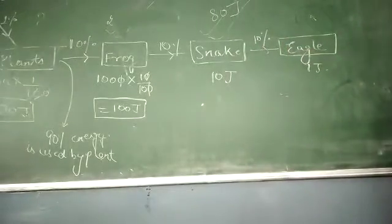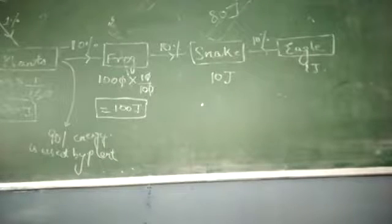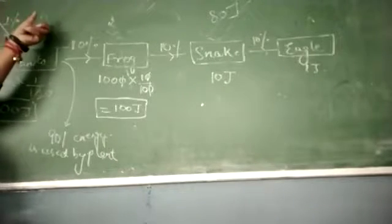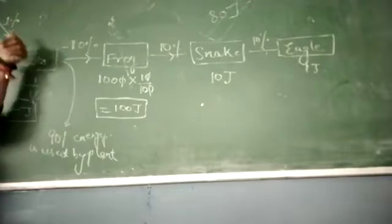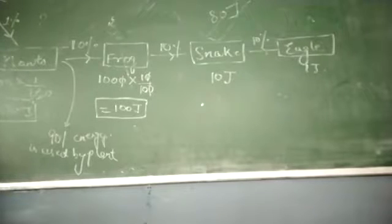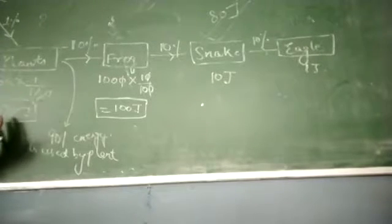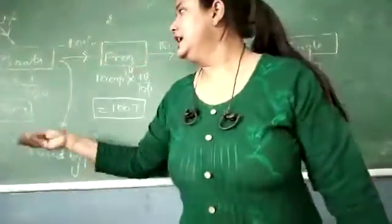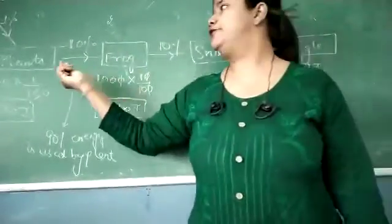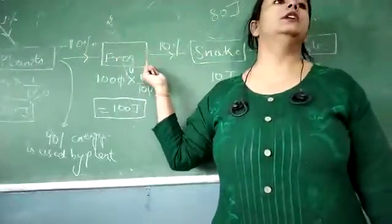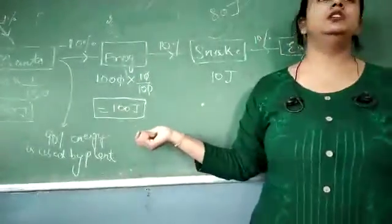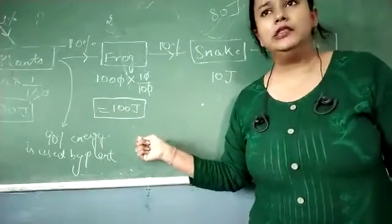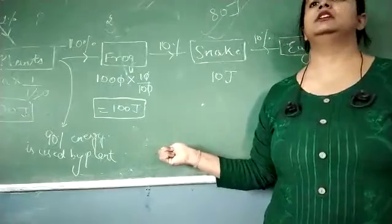Let's repeat: 10% of the energy. We start with the word. The sun gives energy — only 1% of the energy is transferred to the plant. Approximately 10% of the energy is transferred from one trophic level to another, while 90% of the energy is used by the organism. This law is known as the 10% Energy Law.